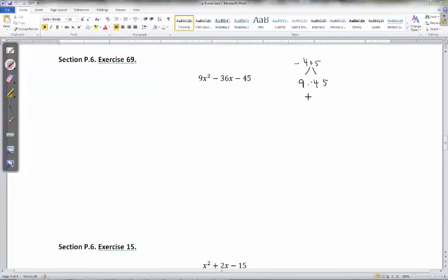So here is our correct answer in this problem. And let's do another one. This problem, I'm going to do it two ways. First, the long way. Full AC method, I would multiply 9 times negative 45. And that's going to be a large number. Let's see. 10 times 45 would be 450, so take away 45 from that and I get 405.